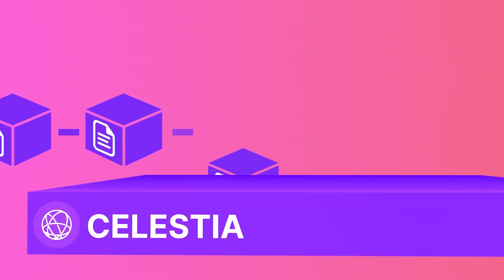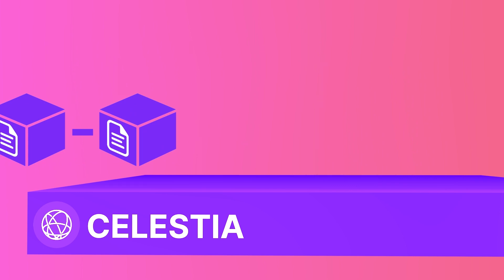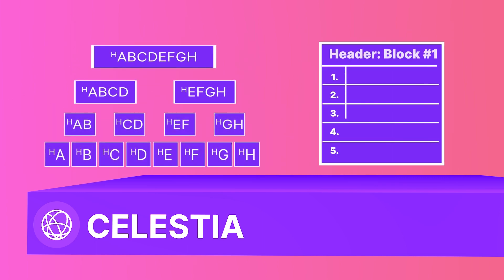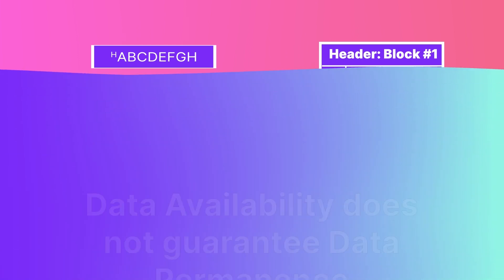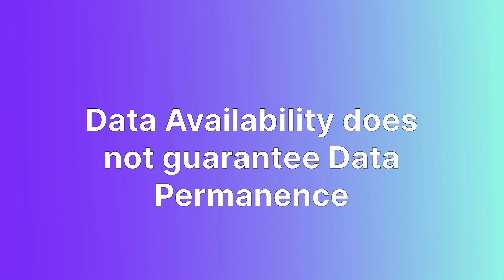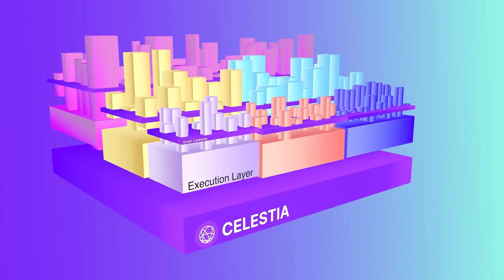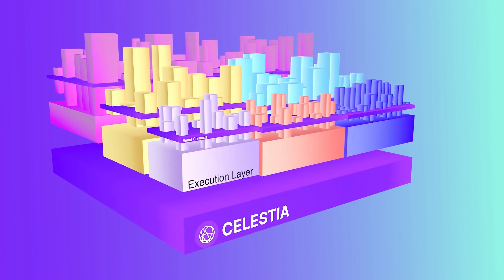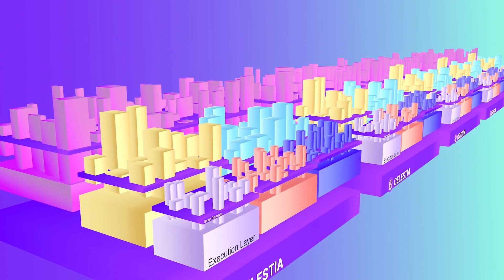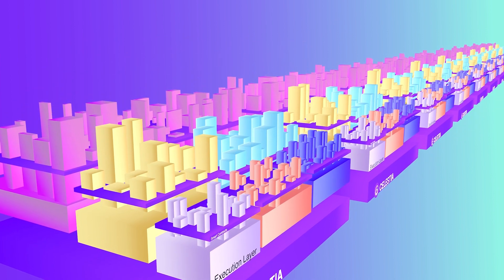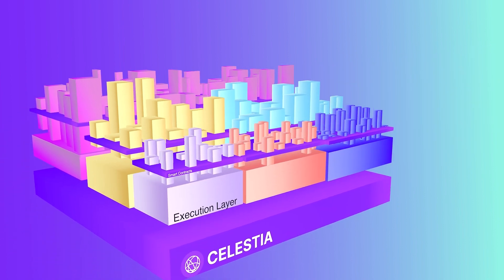The second misconception is that data availability is data storage. Data availability is about publicly publishing new relevant data specific to blockchains for others to verify the chains themselves. This data is Merkleized and ordered on the blockchain and includes transaction and state data. Data availability does not guarantee data permanence. Although it stores blockchain data, this is only for others to verify themselves — it's not a long-term storage or archive solution. When blockchains get too large, pruning of the state is typical to increase speed and decentralization. So data availability isn't about keeping unordered or irrelevant data permanently like decentralized storage solutions or indexers.